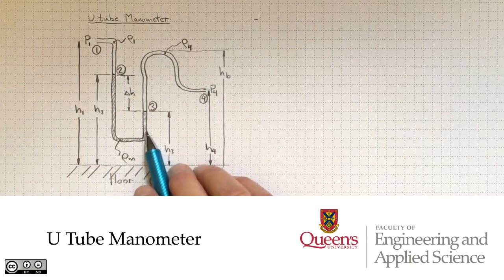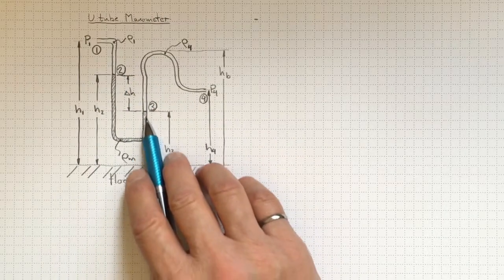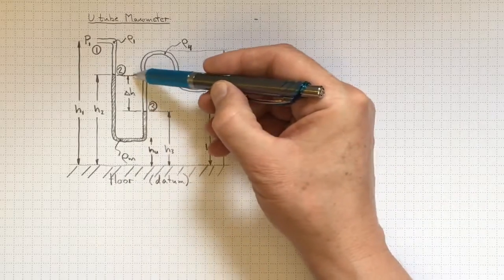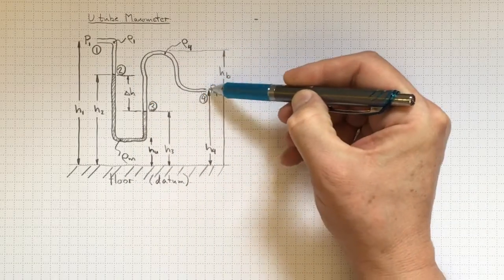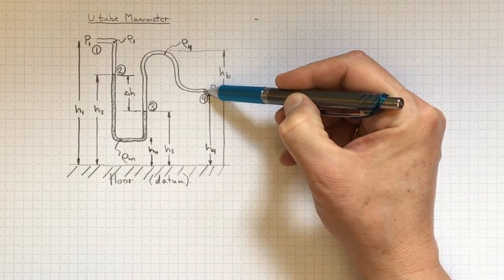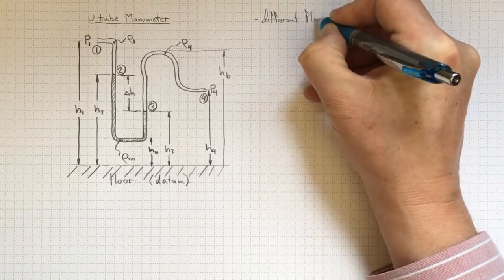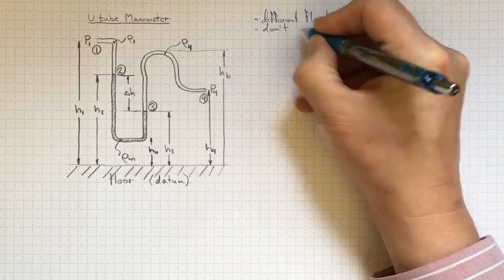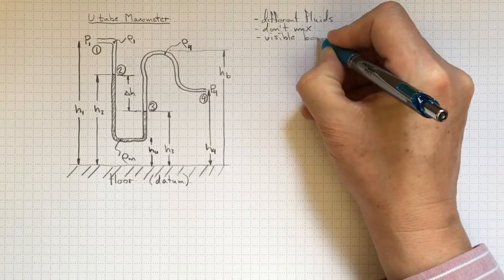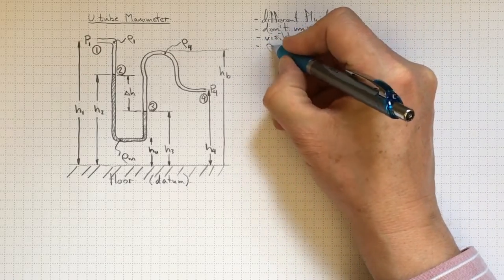A U-tube manometer like this one takes advantage of having two different fluids or more inside tubes and taking advantage of the density differences between those fluids and the difference in elevation that's produced by applying different pressures to either end of the tube to make a pressure measurement. So the key things are that we have different fluids, that they don't mix.